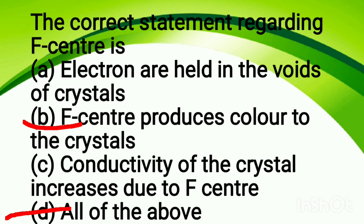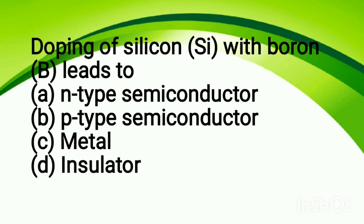Doping of silicon with boron leads to: option A, n-type semiconductor; option B, p-type semiconductor; option C, metal; option D, insulator. The correct answer is p-type semiconductor. Boron is a trivalent compound, so when it is doped into silicon as an impurity, it acts as an acceptor impurity, and the conductivity occurs due to holes — this is how the p-type semiconductor is formed.